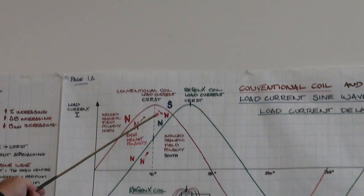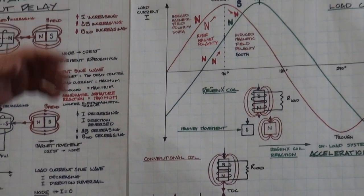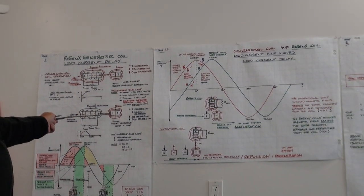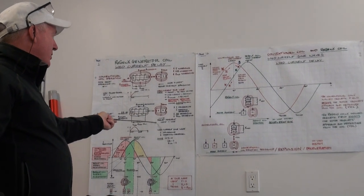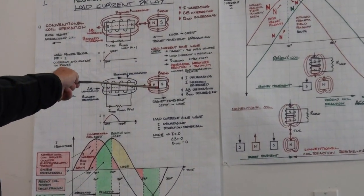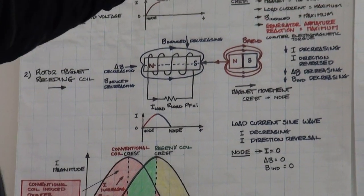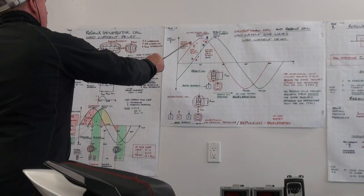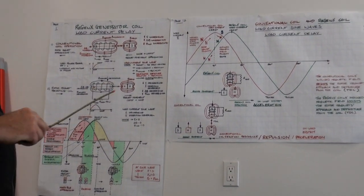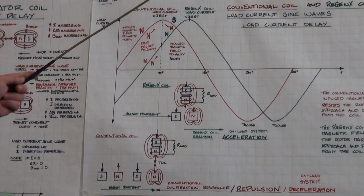On top of that, there is also a south pole magnet coming into position, which is being attracted by this delayed north pole magnetic field. In the conventional generator, the induced south pole resists the departing north pole magnet and also resists the incoming south pole magnet — so it's always resistance. In the Regen-X coil, there is resistance only up to the center point, but at the smallest current level, and it becomes assistance from the center point onward.